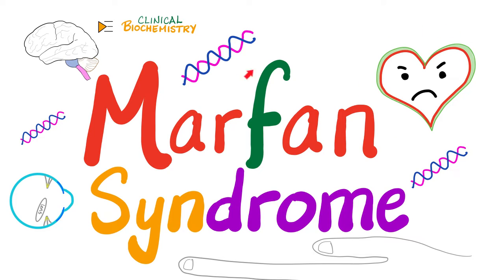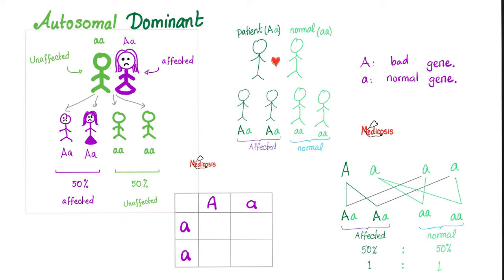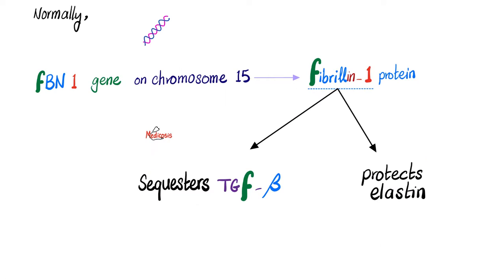Patients with Marfan syndrome have fine intellect and normal IQ. Conversely, patients with homocystinuria usually have intellectual disability. Marfan syndrome is autosomal dominant, but homocystinuria is autosomal recessive. Marfan is a problem in the FBN1 gene on chromosome 15, producing defective fibrillin-1 protein, which normally imprisons TGF-beta and keeps it in check.